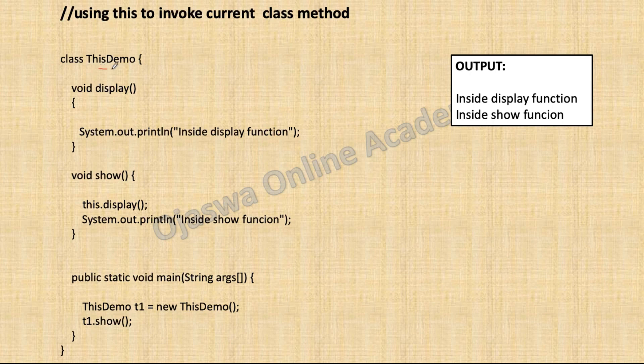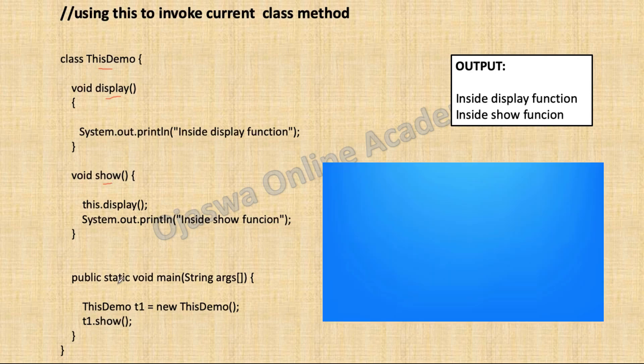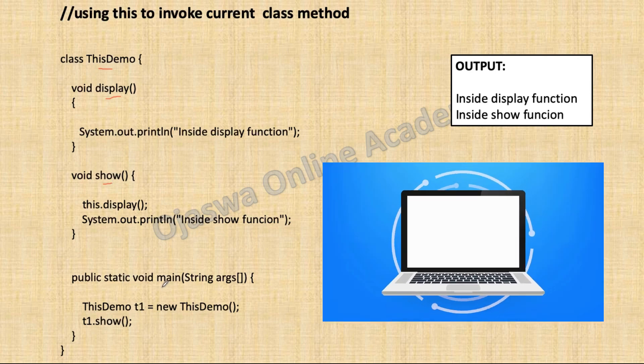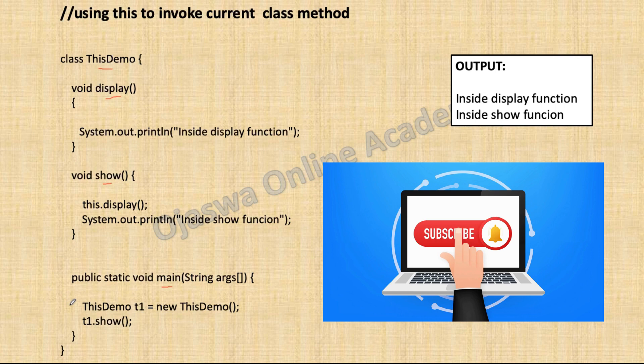We have a class thisDemo. There is a method display, there is a method show, and we are writing the main method in the same class. The execution starts from the main method.